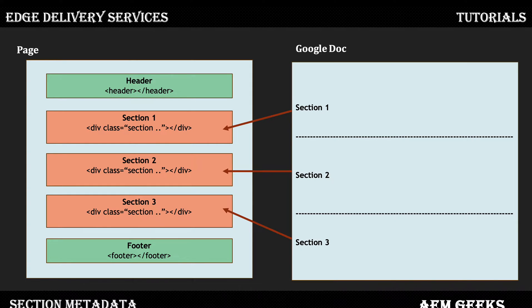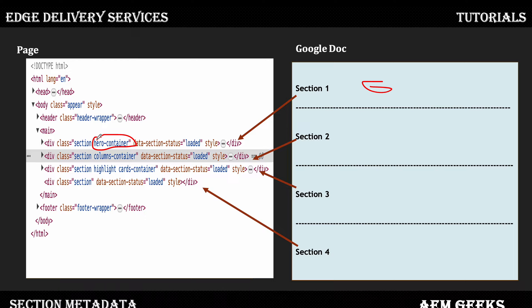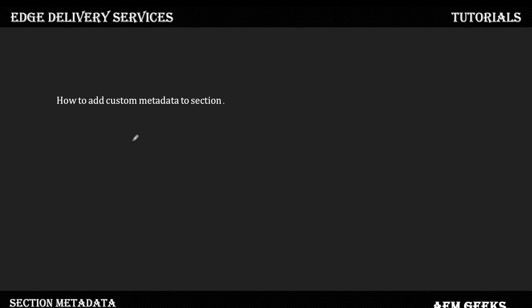But if I want to add some additional classes or additional information to a section — so I can apply some CSS or rules to that entire section, not just a particular block — how do I do that? Let's say I have four sections, and the generated HTML looks like this out of the box. If I want to write additional classes here, how am I going to add those? That's what I'll explain in this tutorial: how to add custom metadata, meaning classes, to a section.